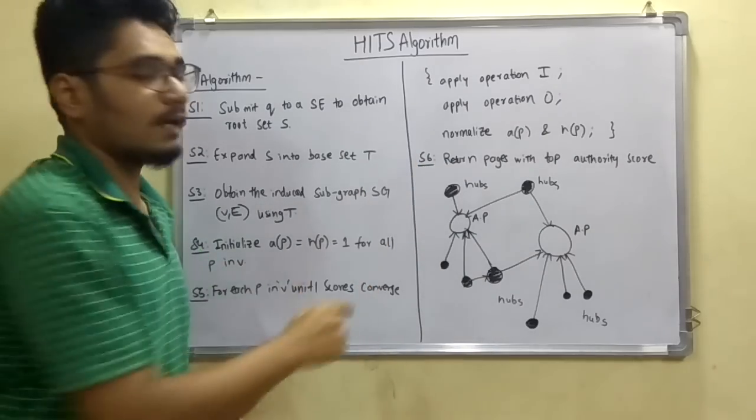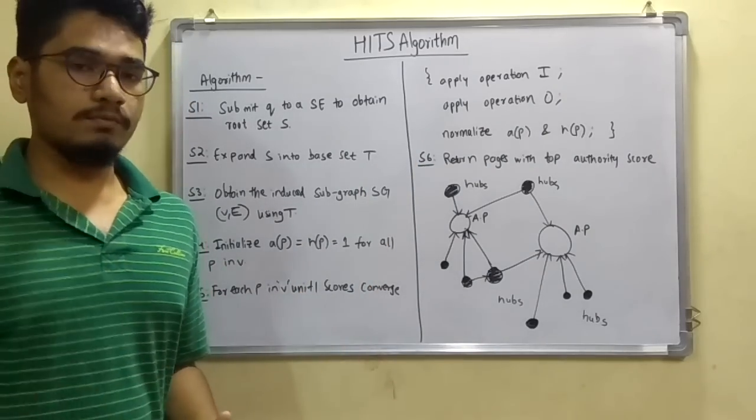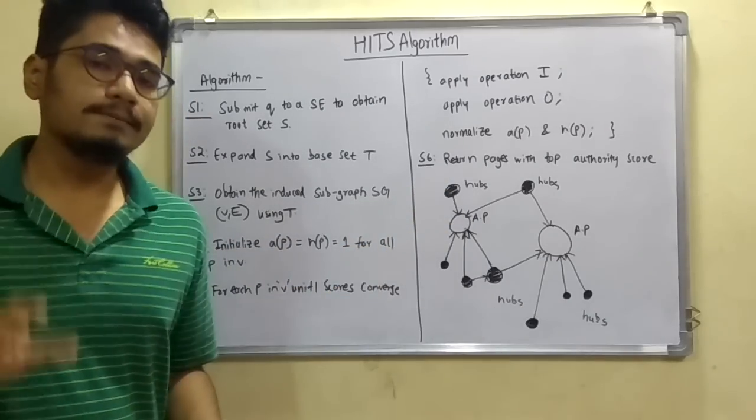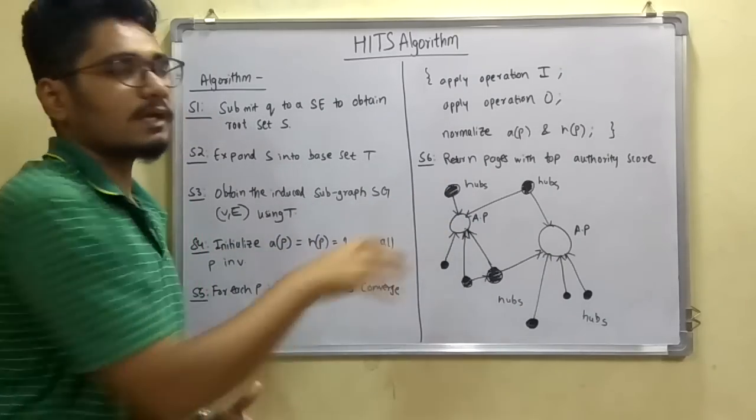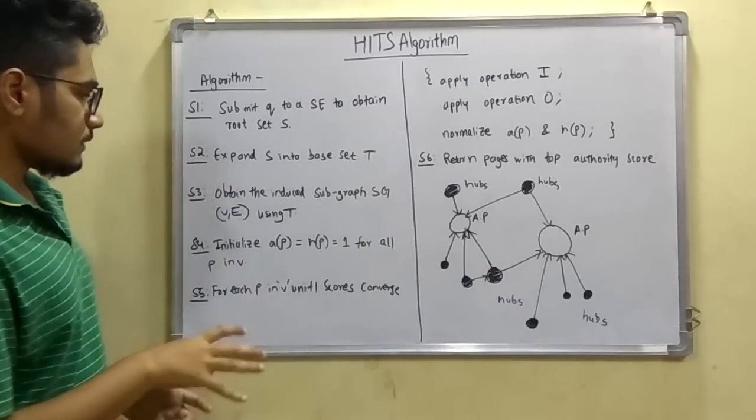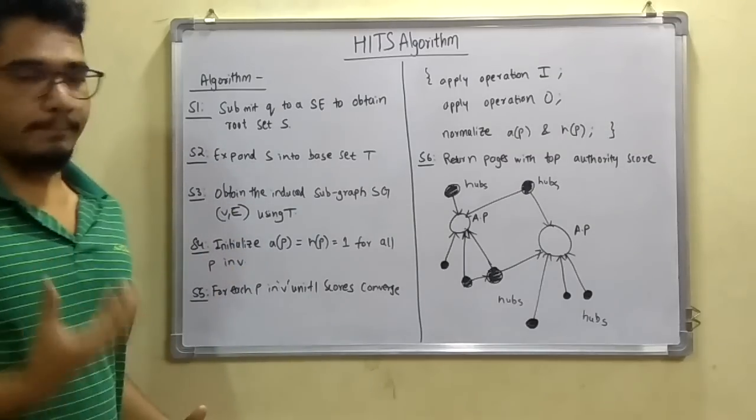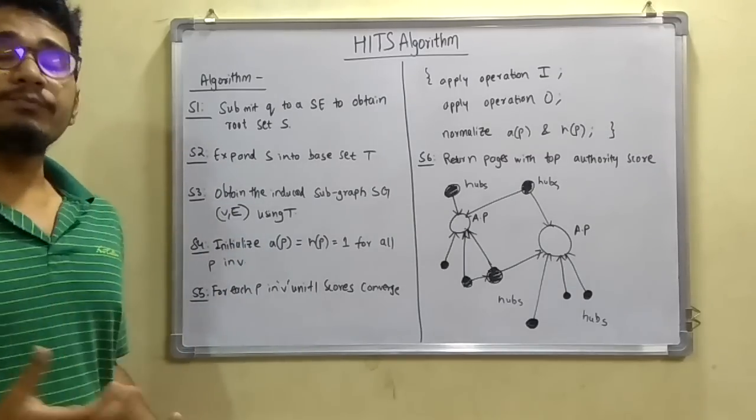As you can see, V is the vertex. All these hubs and authorities are the vertices and the links or the directions which the hubs are providing with authorities, these are the edges. So we can obtain the induced subgraph S(G) using this base set T.